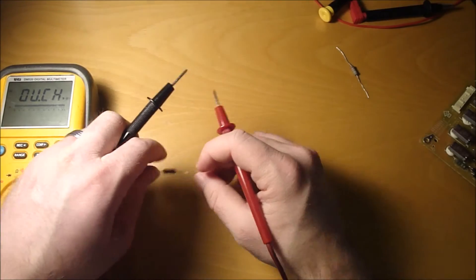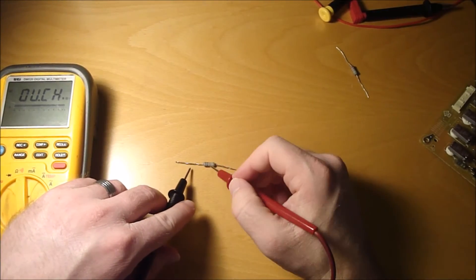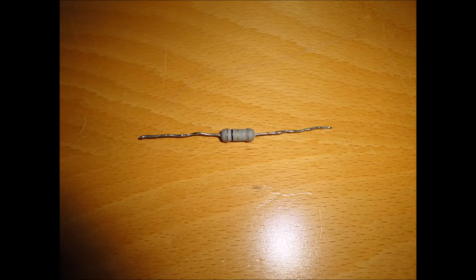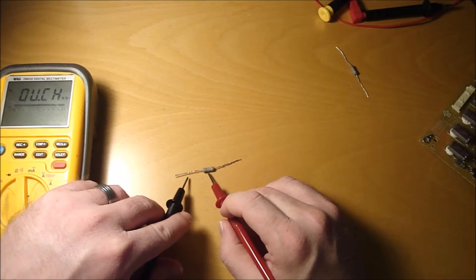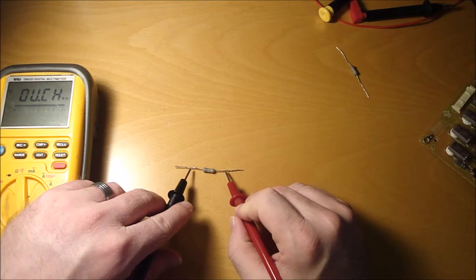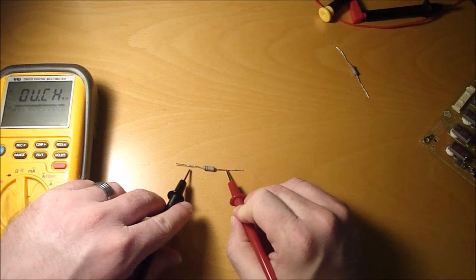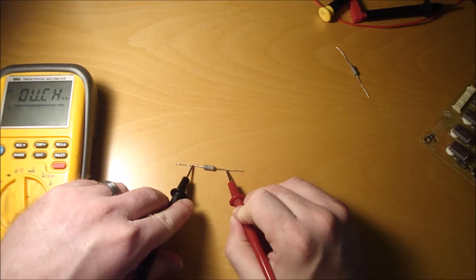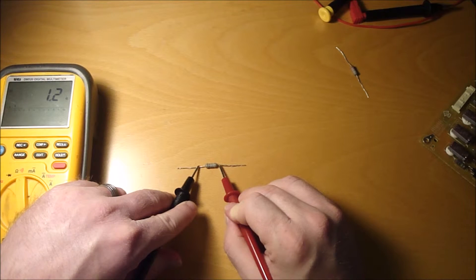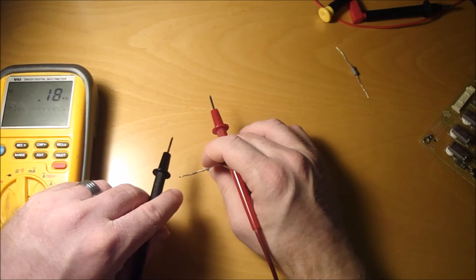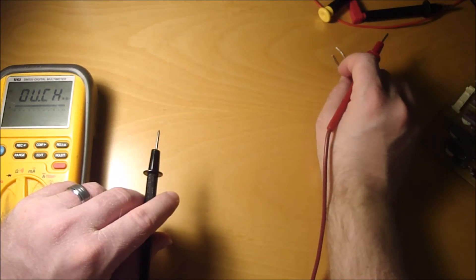Okay, we got another one here. Another four band. So we got brown, black, gold, gold. So brown is one, black is zero, and then gold is times point one. So that would make it one ohm. There we go. Alright, so this would be one ohm. That's really 1.2, so that's pretty close.